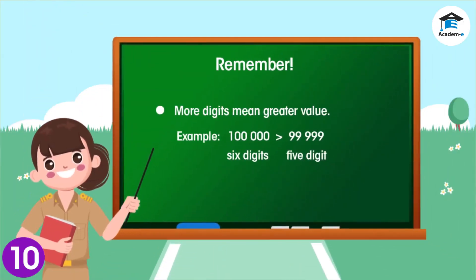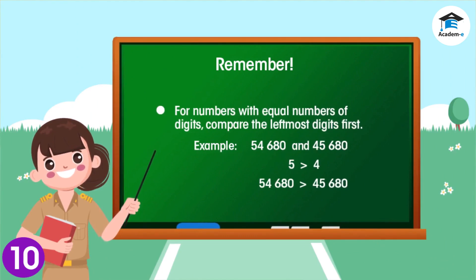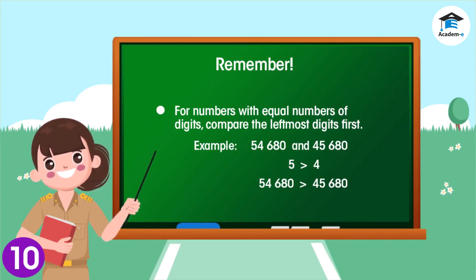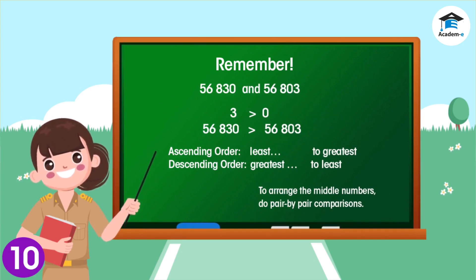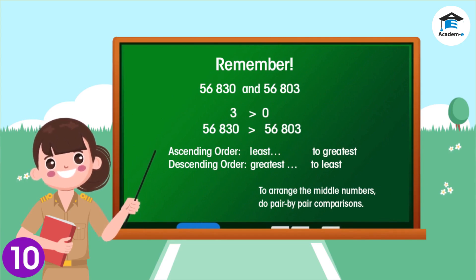Remember: numbers with more digits will always be greater than numbers with fewer digits. For numbers with equal numbers of digits, you compare their leftmost digits, or the digits in the highest place values. If the leftmost digits are the same, compare the next digits to the right. In arranging numbers in ascending or descending order, it is best to pick out first the greatest and the least numbers. To determine the arrangement of the middle numbers, you'll have to do pair-by-pair comparisons of the numbers.